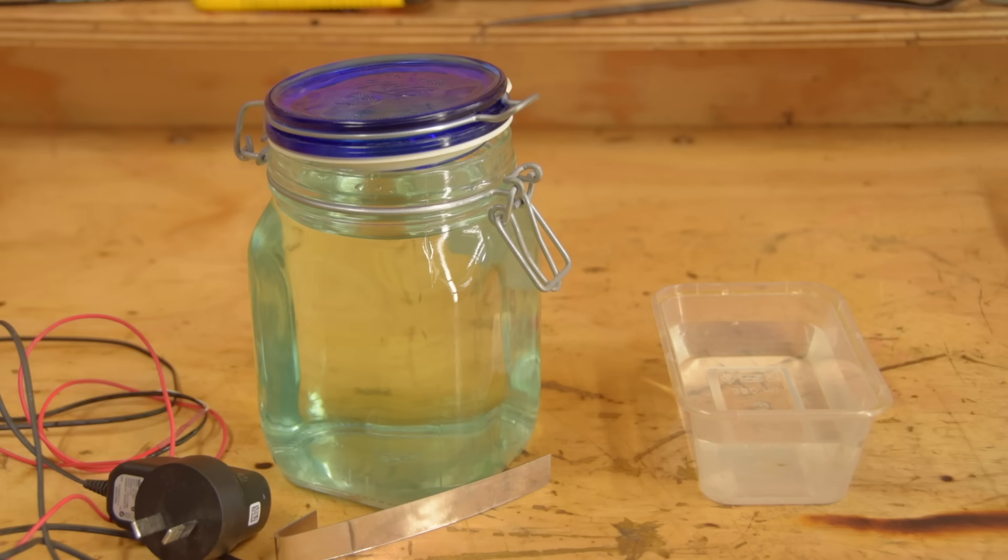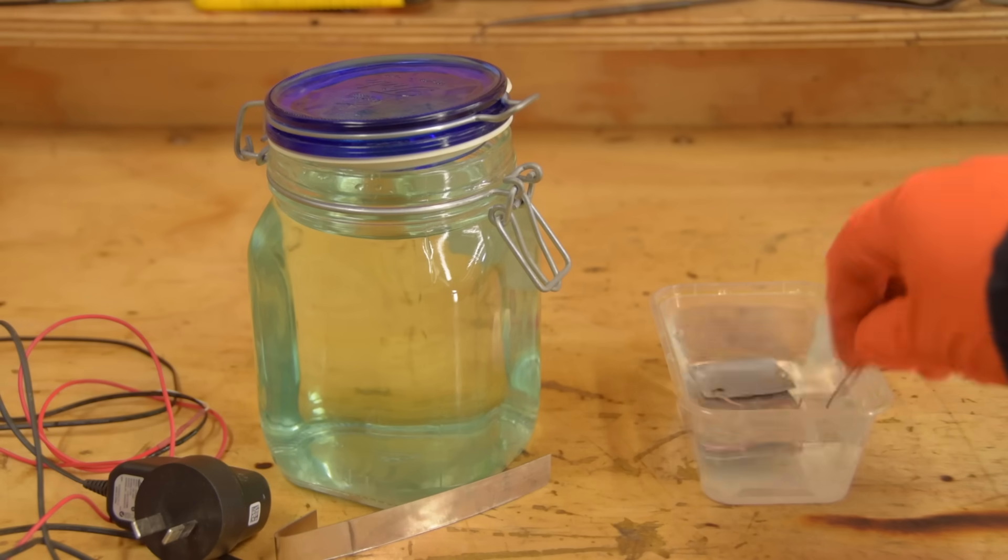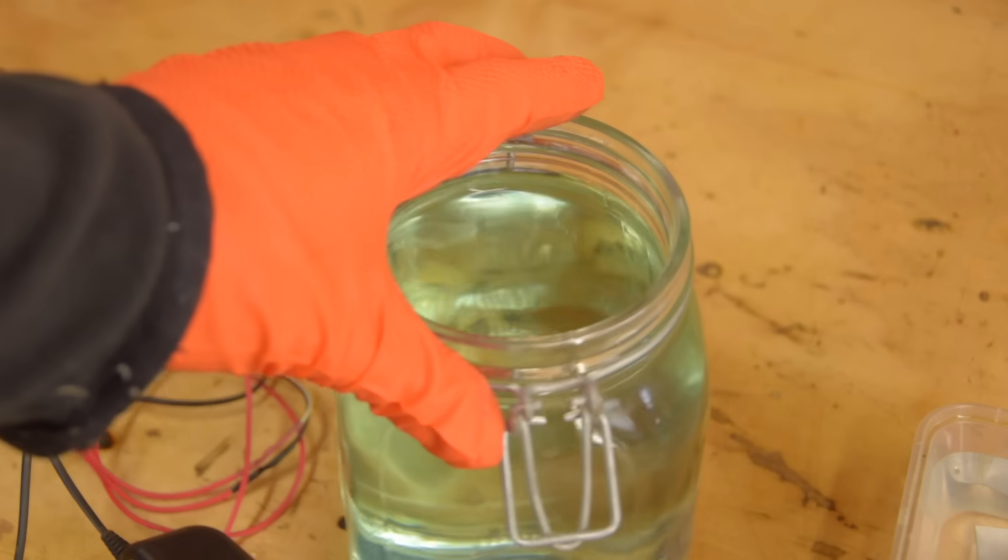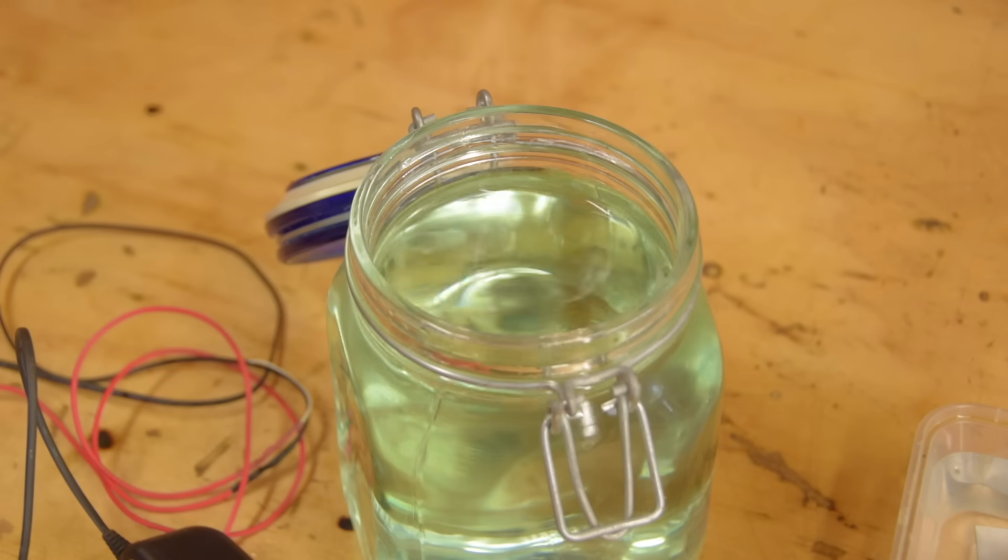Get some tap water ready. This is just for rinsing the acid off the parts, so you don't mess up the electrolyte. Hang one of the pieces of nickel over the container. This is the anode.